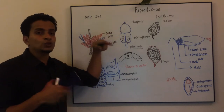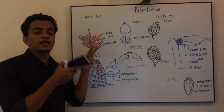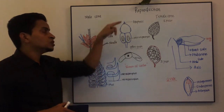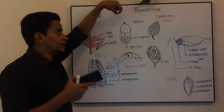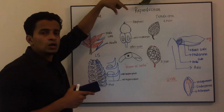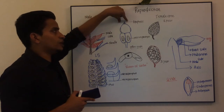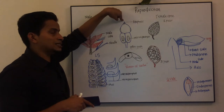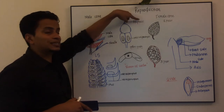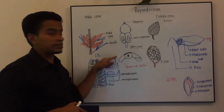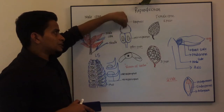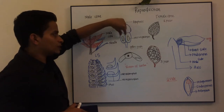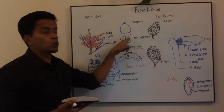Now, how does an individual microsporophyll look? The microsporophyll, like in Cycas, has a terminal portion, but it is of a somewhat triangular shape. The extended sterile region at the apex is known as the apophysis. On the ventral side — the lower side — you can see the microsporangia.